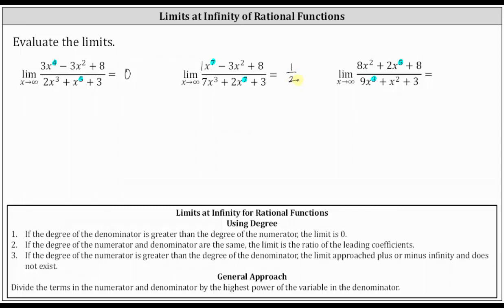Third, if the degree of the numerator is greater than the degree of the denominator, the limit approaches plus or minus infinity and does not exist. For the third rational function, the degree of the numerator is greater than the degree of the denominator. Because x is approaching positive infinity, 2x to the fifth is positive, and so is 9x cubed, and therefore the limit approaches positive infinity, which indicates the limit doesn't exist.